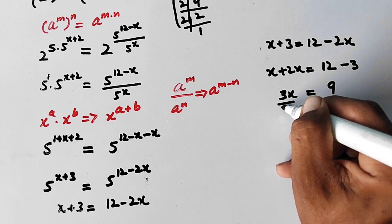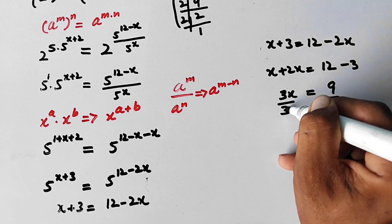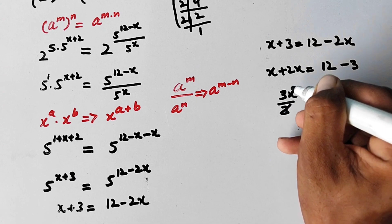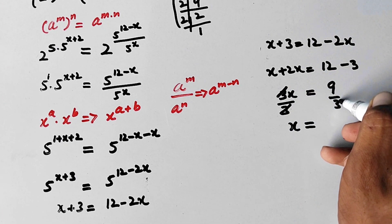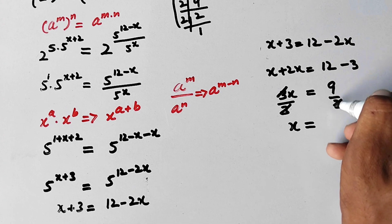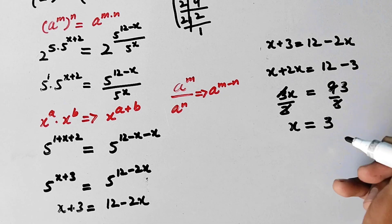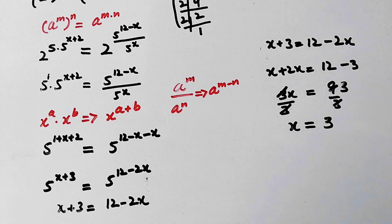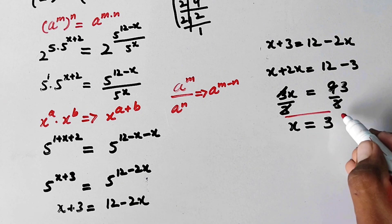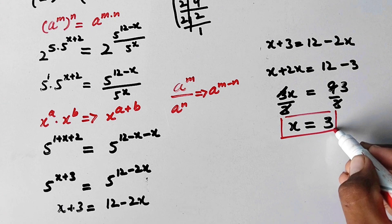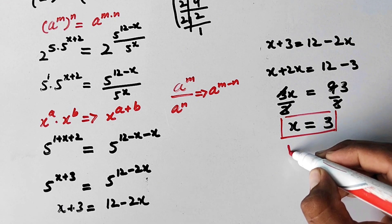Now we will divide both sides by 3. The 3 cancels and x is equal to 9 divided by 3, which is equal to 3. So x equals 3, and this is the value of x. We can write it as our final answer.